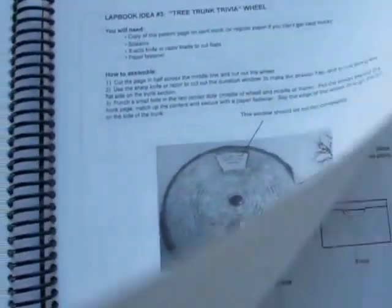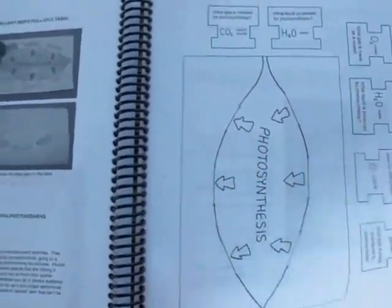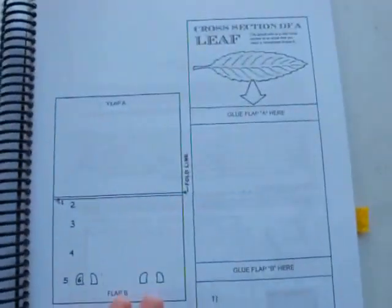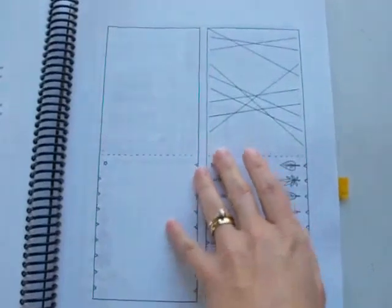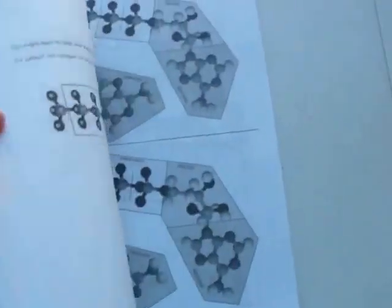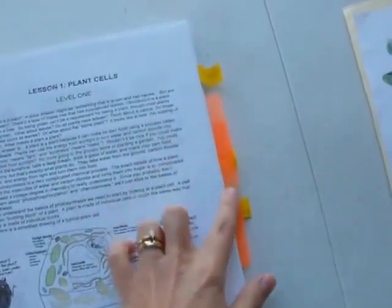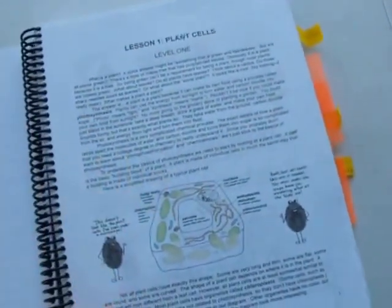We chose this one, the Tree Trunks Trivia Wheel. We chose the Photosynthesis 1. It gives you directions over here on how to do it, and then the copy of what you need. And we also done this one, the Cross Leaf section. And here's the one you have to print off to make that. So there's just more options here for Lap Book. After that, you have some Consumable Pages. So now you know how it's set up.